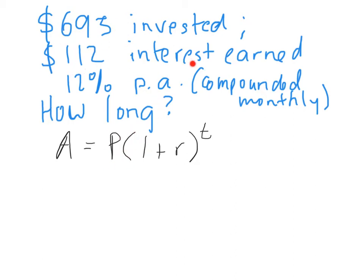$112 of interest was earned. Now, we don't use the interest earned in the formula, remember. R stands for the rate, and what does A stand for? It does stand for the amount. Someone be a bit more specific. The principle and interest. Thank you, the principle and the interest combined.